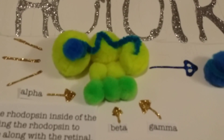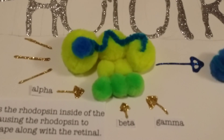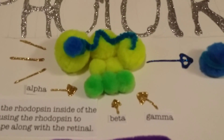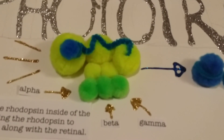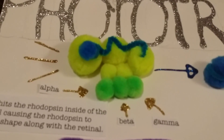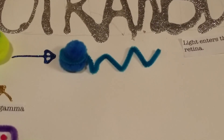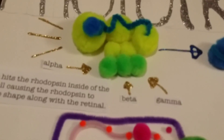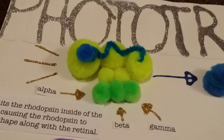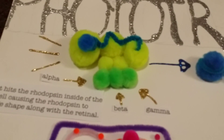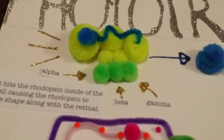This is a rhodopsin in a much closer view. You can see that it has a particle inside — this is known as the retinal. And when light hits that, it turns into this, so it straightens out. Also, whenever light hits the rhodopsin, the rhodopsin itself changes shape, and the transducin is added on.